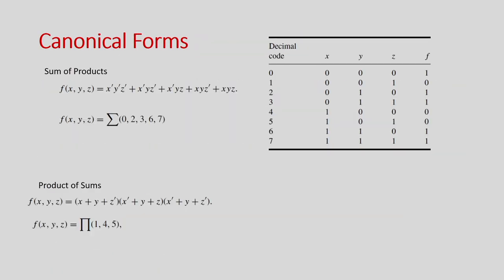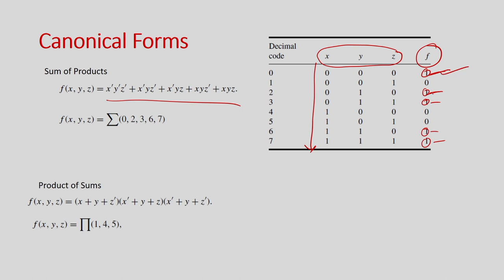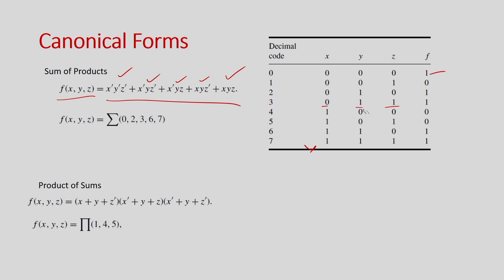I will explain how to convert a function into canonical SOP and POS form using a truth table. Suppose you have variables x, y, z — there are 8 possible values 0 to 7. Each minterm either occurs in the function or not. If f is 1 at certain rows, those minterms appear in the SOP. For example, x bar·y bar·z bar, x bar·y·z bar, x bar·y·z, and so on — these 5 product terms form the unique SOP representation.